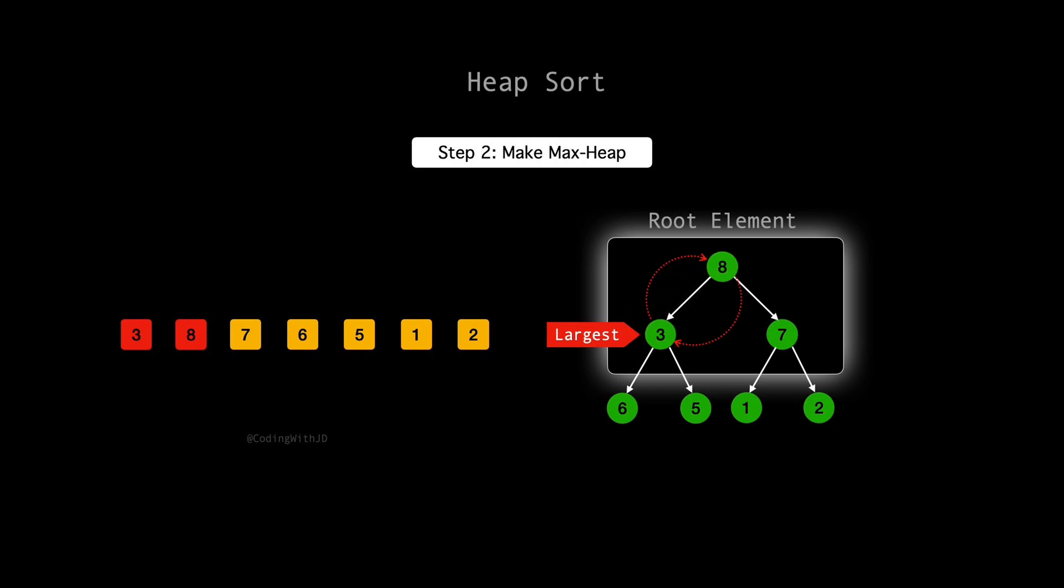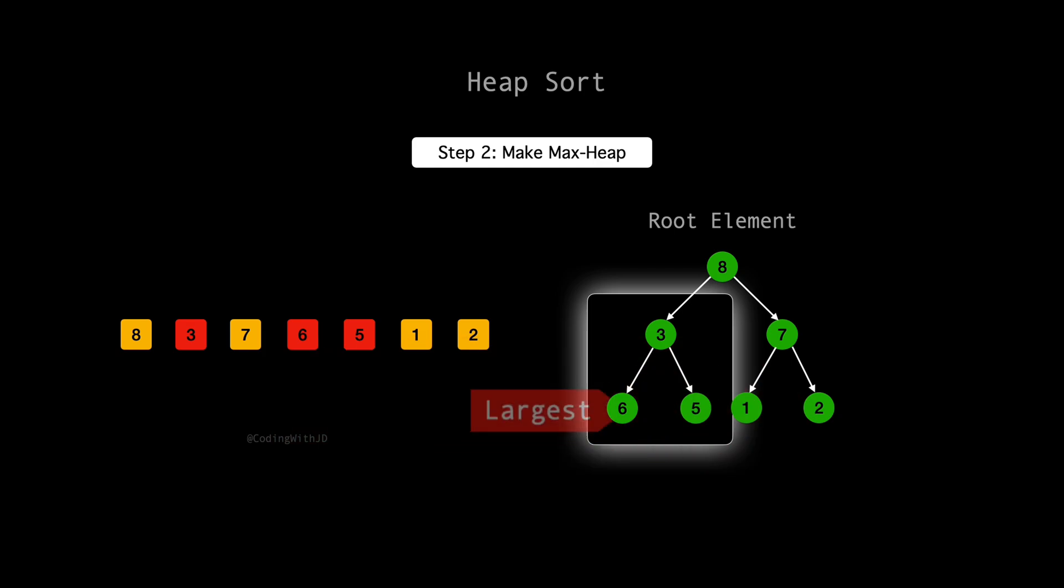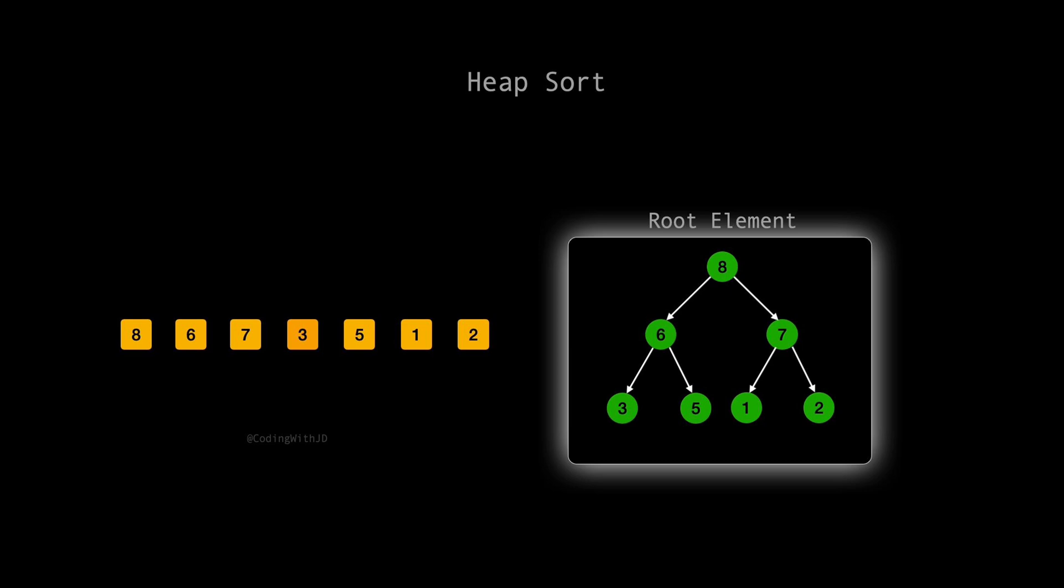Great, we're almost there. But observe 3, which is now a child under 8. Between 3 and its new children, 6, 5 is still in the right spot, but 6 is larger than 3. Let's swap those two to finalize our heap. There we have it. Each parent node now presides over its children with the highest values on top. Our max heap is ready.